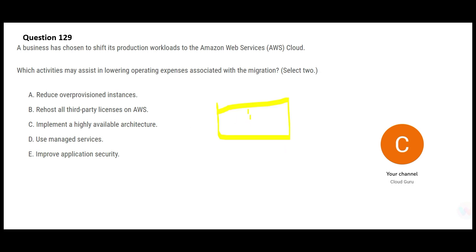Next question: a business was on-premises and now wants to move their production workload to AWS cloud. The question asks how to lower operating expenses when doing this migration from on-premises to cloud. You have to choose two answers.